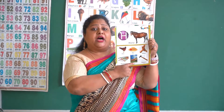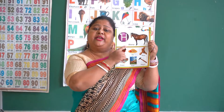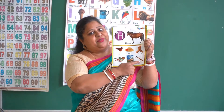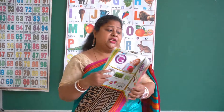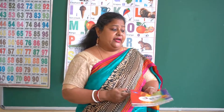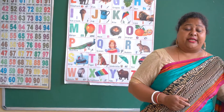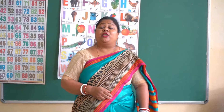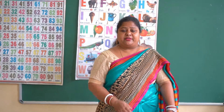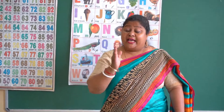Next page — H for horse, H for hand, H for hanger, H for house, H for hammer. Okay students, now we have done from A to H. Now we'll go through our recitation book — the Little Red Apple Rhyme Book.